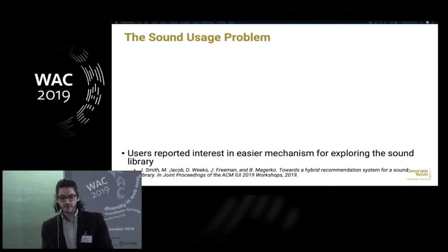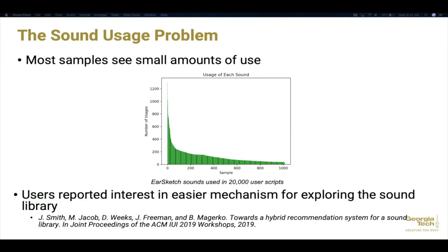An overarching problem with EarSketch users in the past is that most of their sound usage has been relegated to a very small amount of samples — primarily those used in tutorial examples as well as simple hits or drum samples. Less than 5% of the samples are used in more than a fifth of the scripts. We conducted a study last year interviewing users, and most reported wanting an easier way of navigating sounds instead of searching through a large dictionary, and wanting to be introduced to sounds more organically, with automatic grouping beyond generic number labels and artist labels.